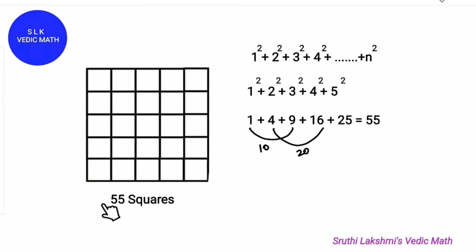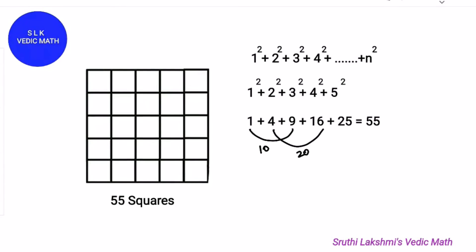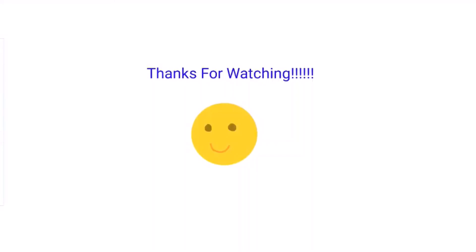Is your answer correct? Now you know how to mentally calculate how many squares there are in an n by n grid. Isn't this trick so easy? Thanks for watching!